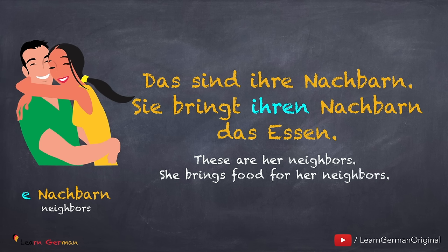Das sind ihre Nachbarn. Sie bringt ihren Nachbarn das Essen. Since the article for 'Nachbarn' is 'die' in plural, the possessive pronoun would be 'ihren'. In this case, we don't add an 'n' to 'Nachbarn', since the plural form already has an 'n' at the end.